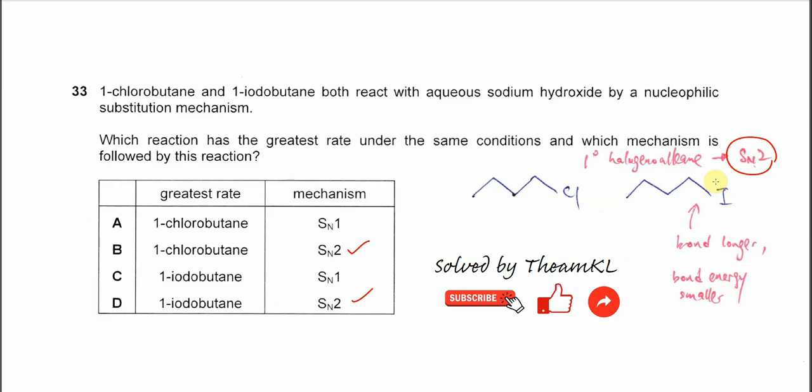So 1-iodobutane is the one with the greatest rate because the bond length is longer, bond strength is weaker, easier to break and easier to react. So the answer is D.